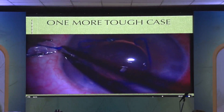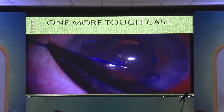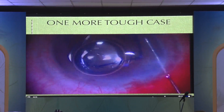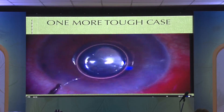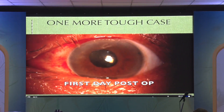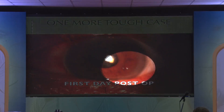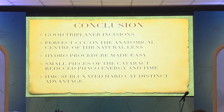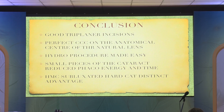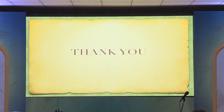Remove the hooks, the endocapsular ring is in, remove the malugan ring. A little bit of air injected and the patient does quite well. First day post-op shows a little superficial keratitis superiorly, but the center is quite clear. In conclusion, FLAG has big benefits: CCC precision, hydro procedures made easy, small pieces mean less phaco energy, and in subluxation and hypermature cataracts, it has a distinct advantage over routine surgery.